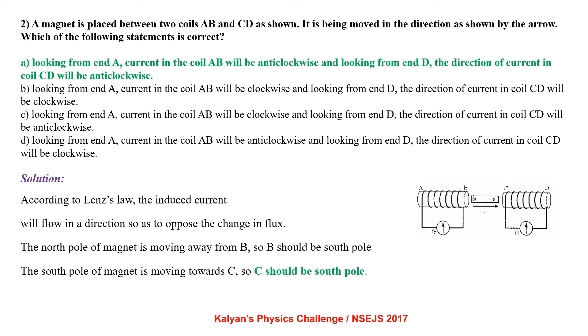A magnet is placed between two coils AB and CD as shown. It is being moved in the direction as shown by the arrow. Which of the following statements is correct? Looking from end A, current in the coil AB will be anticlockwise and looking from end D, the direction of current in the coil CD will be anticlockwise.